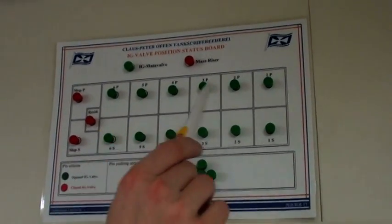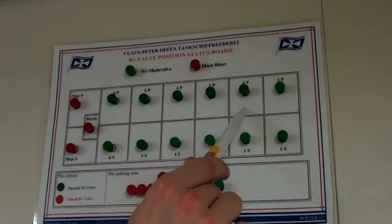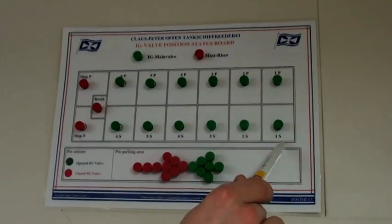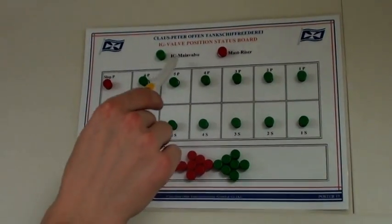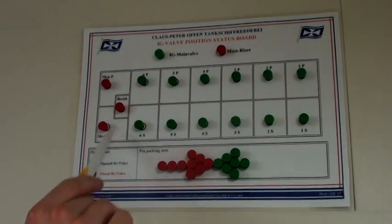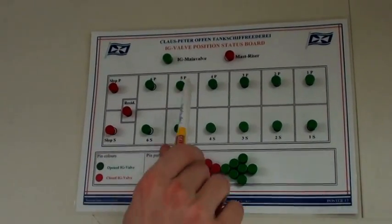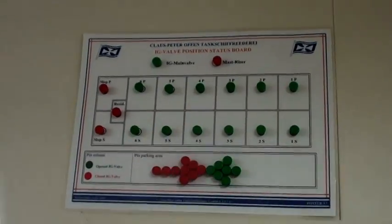On the status board you have indications in green which IG branches are opened and that IG main valve is opened. For example, the red one indicates that slops and residual IG branches are closed and the mast riser is closed.